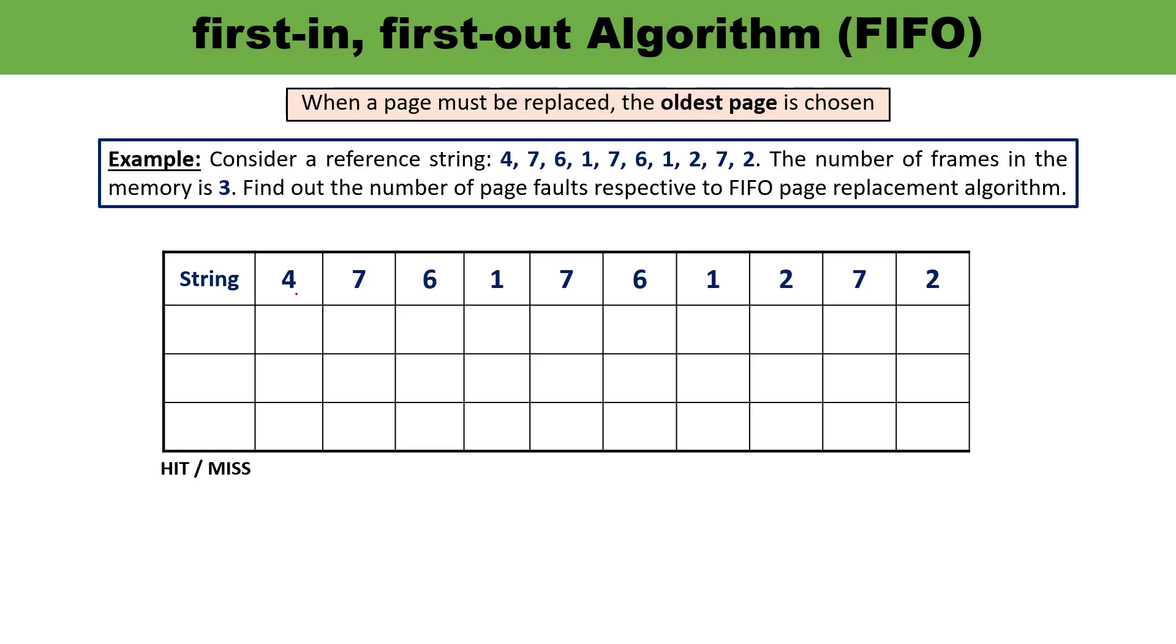The string is being given, I've just listed out whatever is in the question. So here you can see three rows F1, F2, and F3. You can write frames in reverse order also. F1 I have written because the first number will be stored over here.